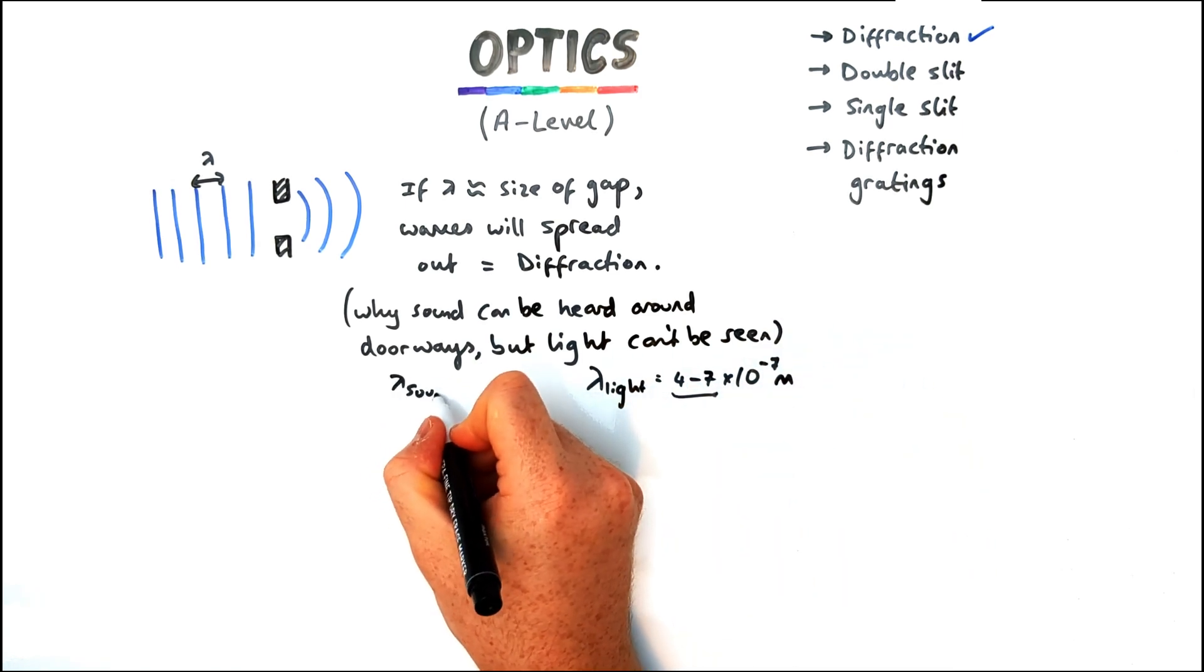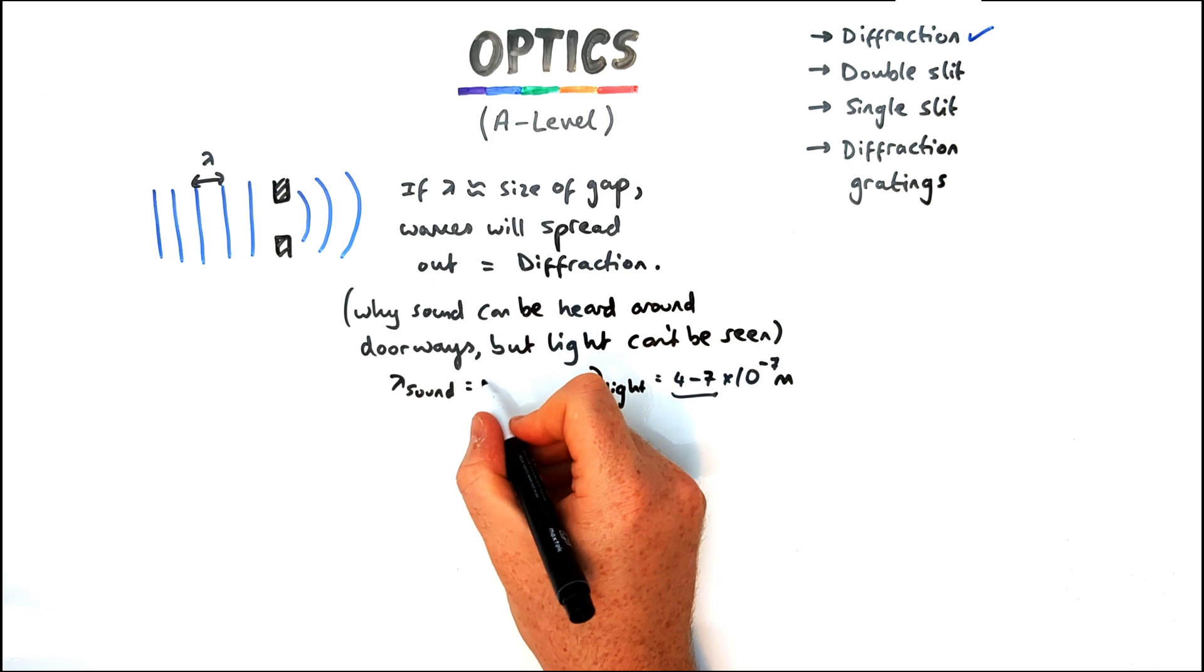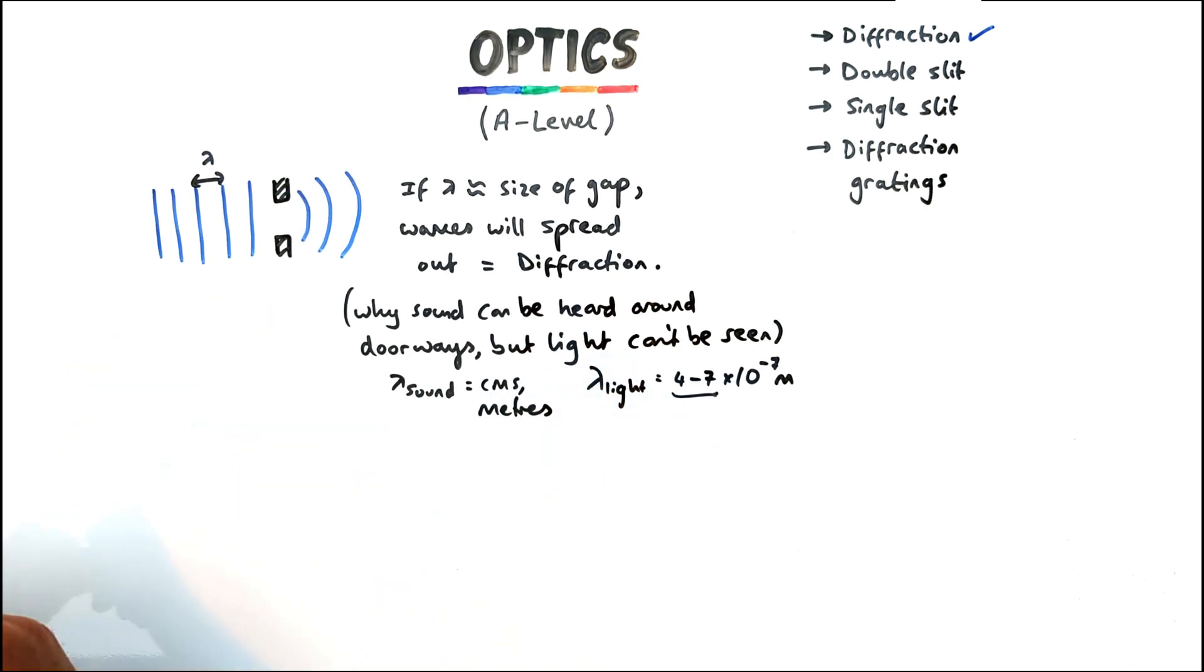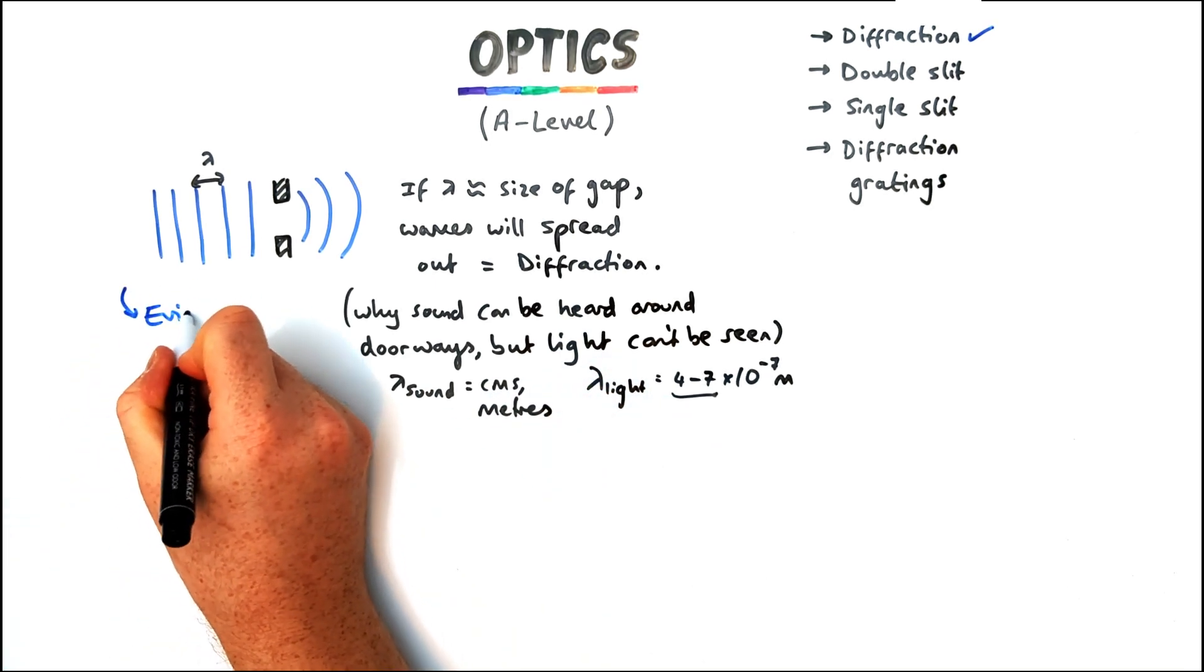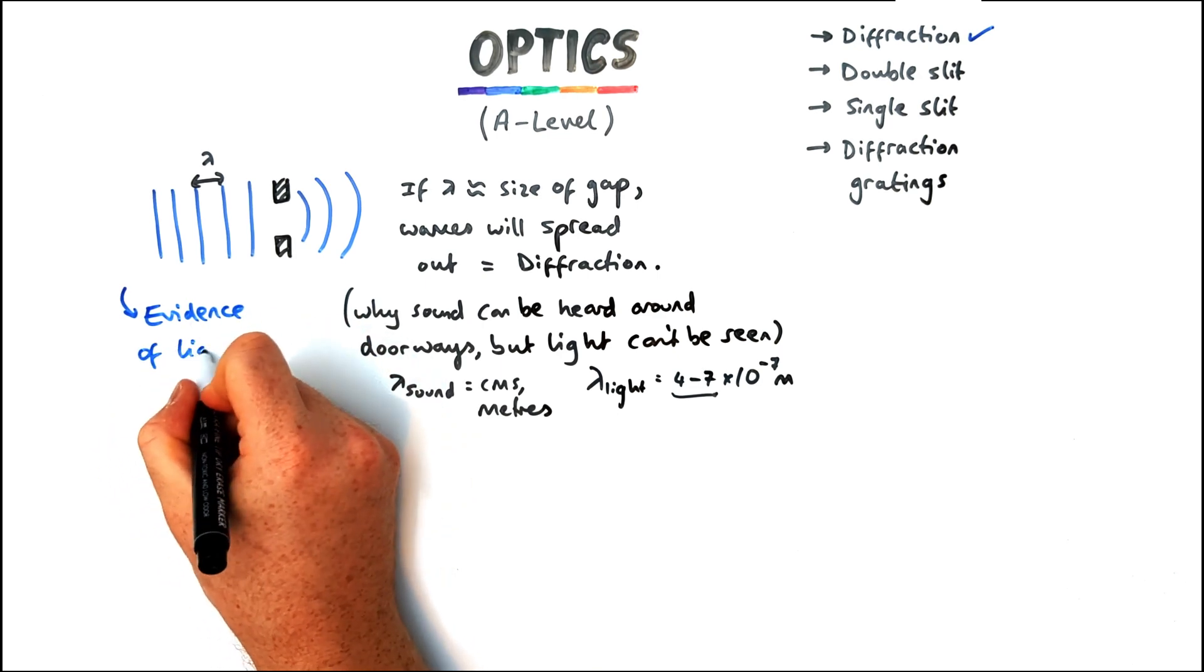Roughly of the same order as a doorway, so talking about centimeters, meters, as opposed to light where the wavelength is hundreds of nanometers. So you need a very small gap for light to be able to diffract.